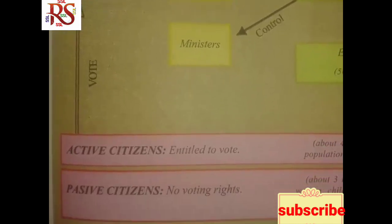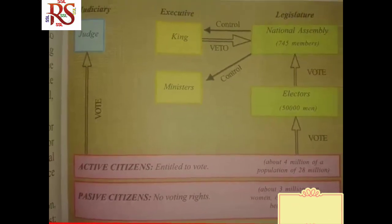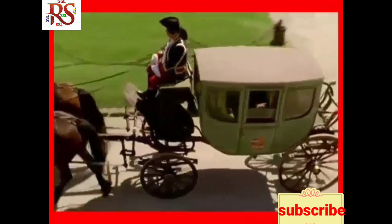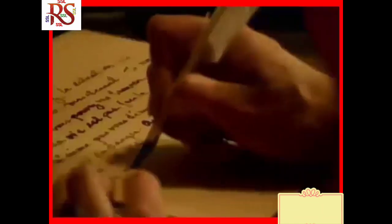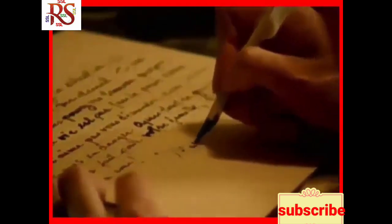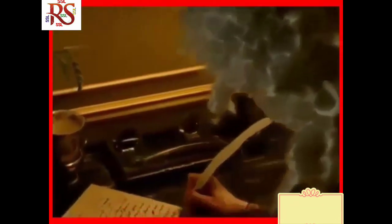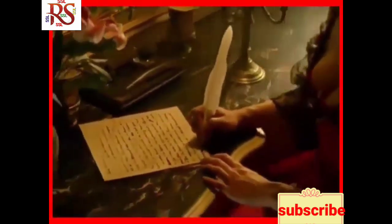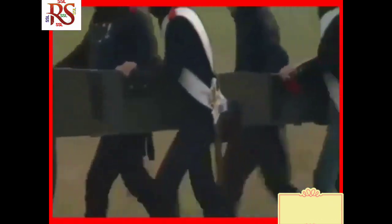Women and the French Revolution: one of their main demands was that women should get the same political rights as men. Women were disappointed that the constitution of 1791 made them passive citizens. They demanded the right to vote, to be elected to the assembly and to hold political positions. It was finally in 1946 that women in France won the right to vote.